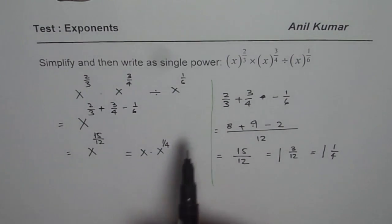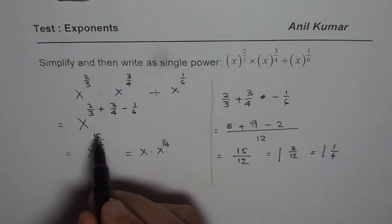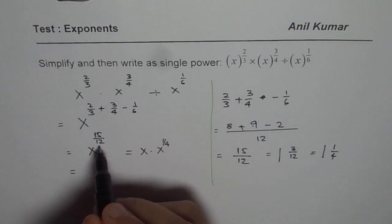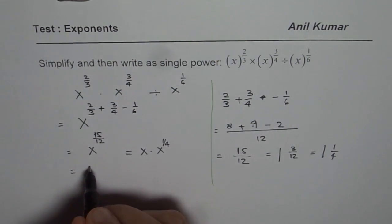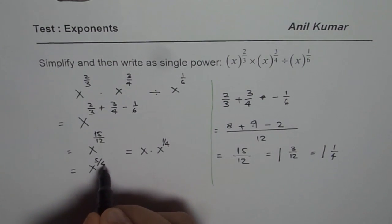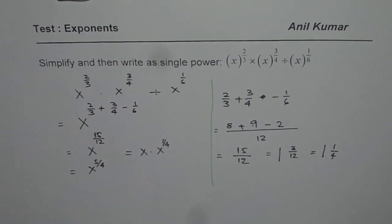Now since we have to write as a single power, let me reduce from here. If I divide both by 3 as a common factor, we get 5 over 4. So that could be your perfect answer.